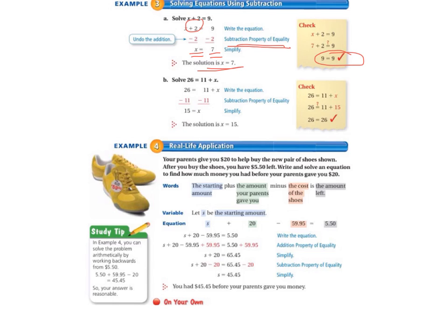Letter B. We solve 26 equals 11 plus x. We write the equation. Since we're using addition in our equation, then we want to undo that using the subtraction property of equality. 26 minus 11 equals 15. 11 minus 11 equals 0. So that leaves x on the right-hand side. So we simplify that, and it's 15 equals x. We check it. 26 equals 11 plus 15. So 26 equals 26. It checks out. The solution is x equals 15.